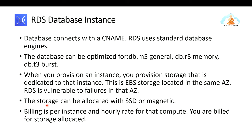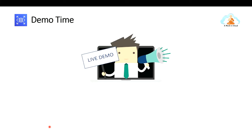The storage you select can be SSD or magnetic depending on your use case. This is just a high-level overview of RDS — the demonstration will make it clearer. Billing is per instance on an hourly basis for compute, and you are billed for the storage allocated. Let us now head to the AWS console and see how to create an RDS database instance and what options are available.